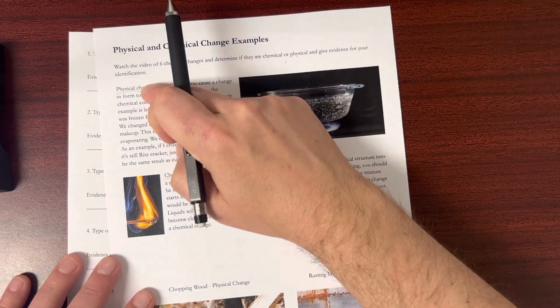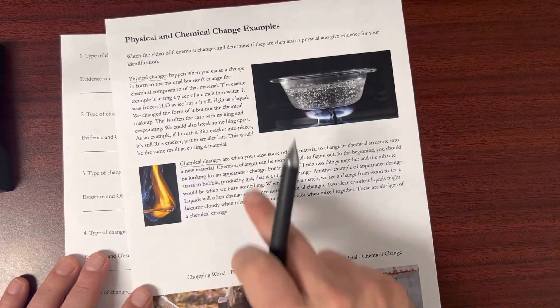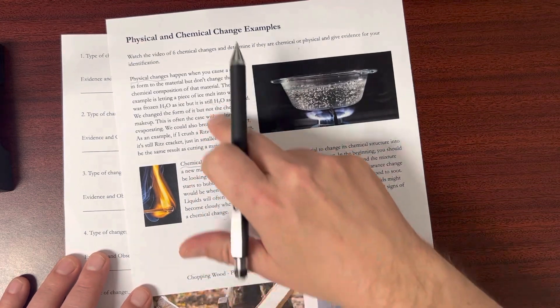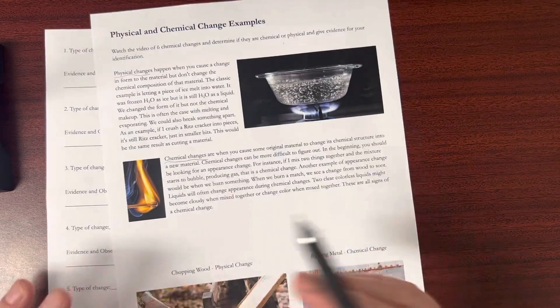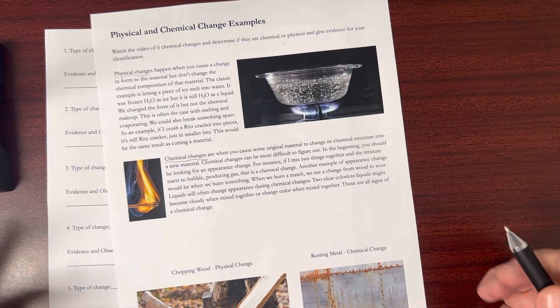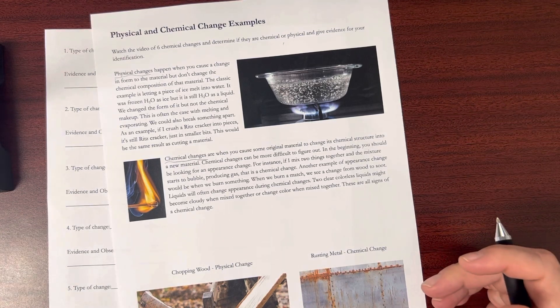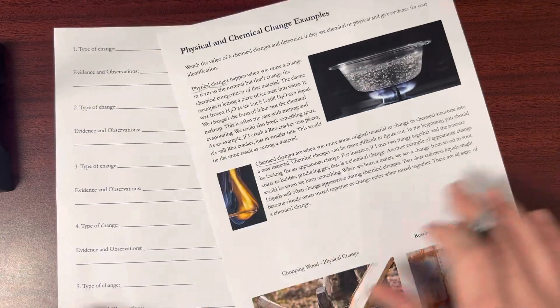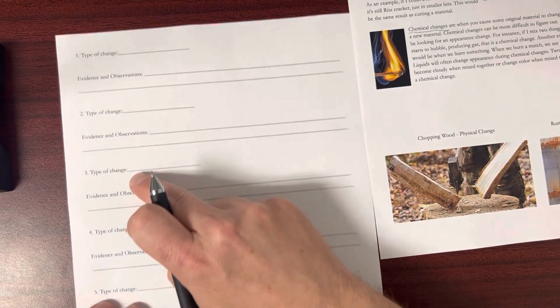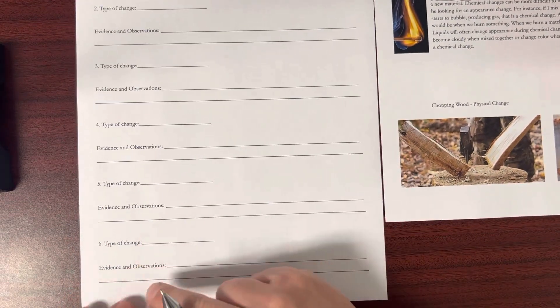So write down physical or chemical. And for your observations or evidence, you can use stuff from this description here. You can also look stuff up online. That's totally fine. They'll give you descriptions of each that you might notice when you're seeing each one of my quick reactions.